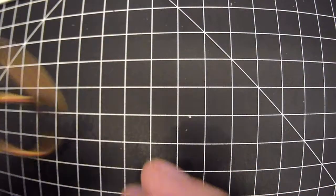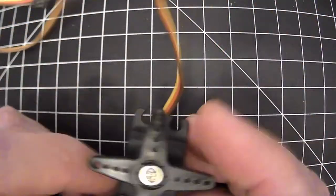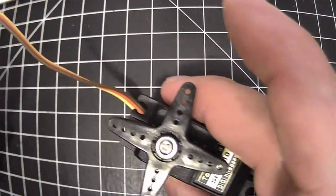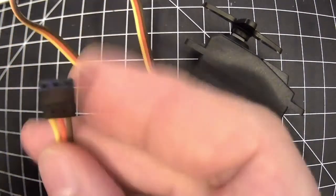Servo motors have this interesting property of actually letting you position them and they do that because they have a control line. So unlike the generic DC motor they have these three wires.